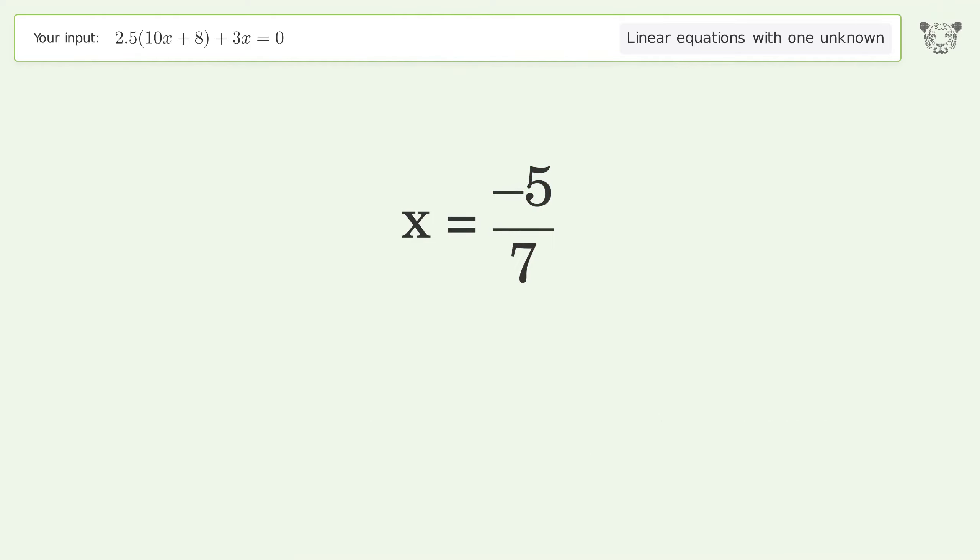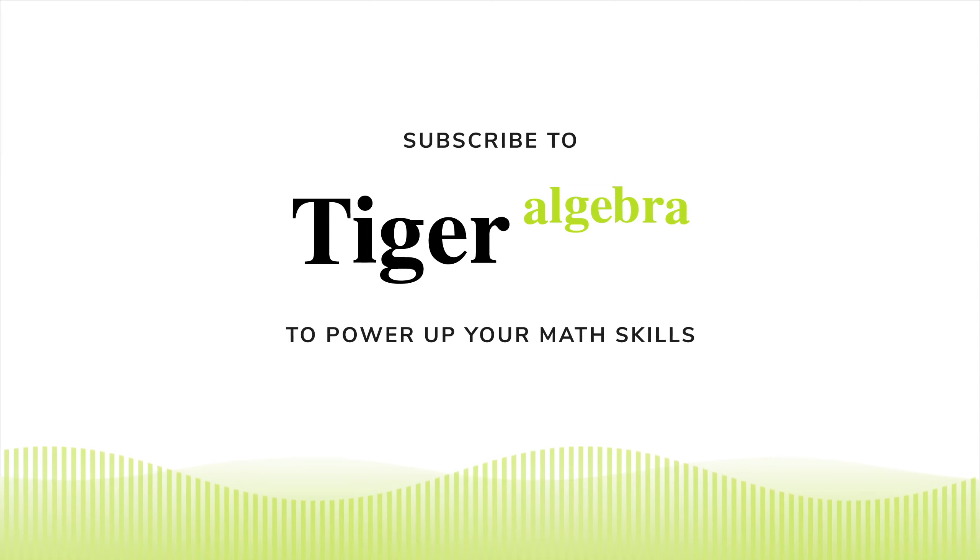Factor out, and so the final result is x equals negative 5 over 7. We'll see you in the next question.